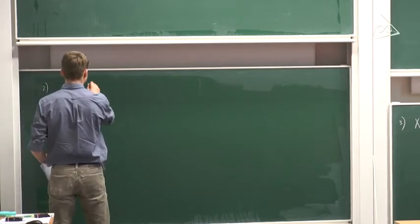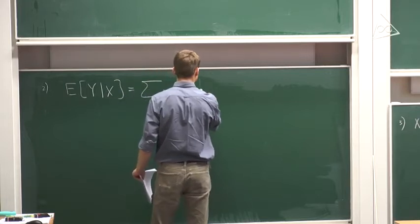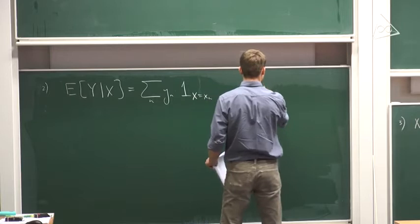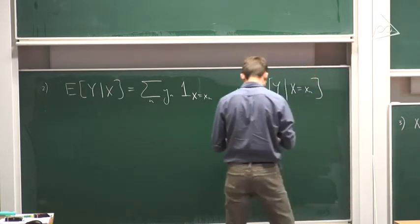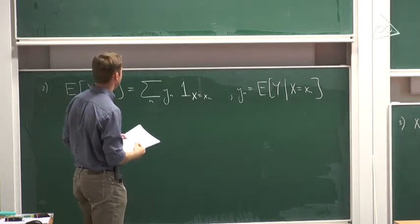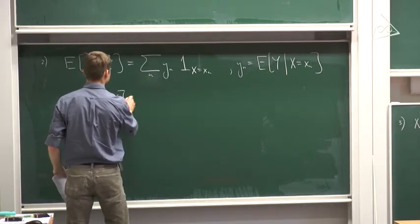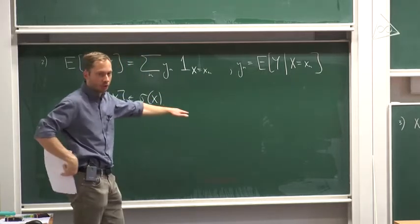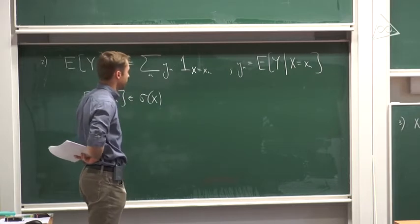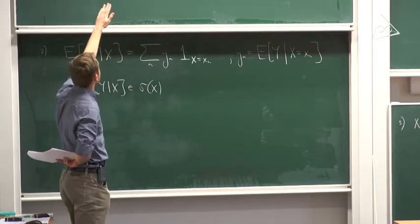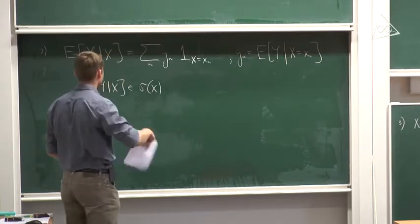The first example I introduced was: the conditional expectation of Y with respect to X equals the sum over all n of Yₙ times the indicator that X equals xₙ, where Yₙ is the expectation of Y with respect to the event that X equals xₙ. The first observation is that this expectation is σ(X)-measurable — it is a random variable measurable with respect to the sigma algebra generated by X. By the proposition, its distribution is uniquely determined by the expectations E[E[Y|X] · 1_C] for C in σ(X).